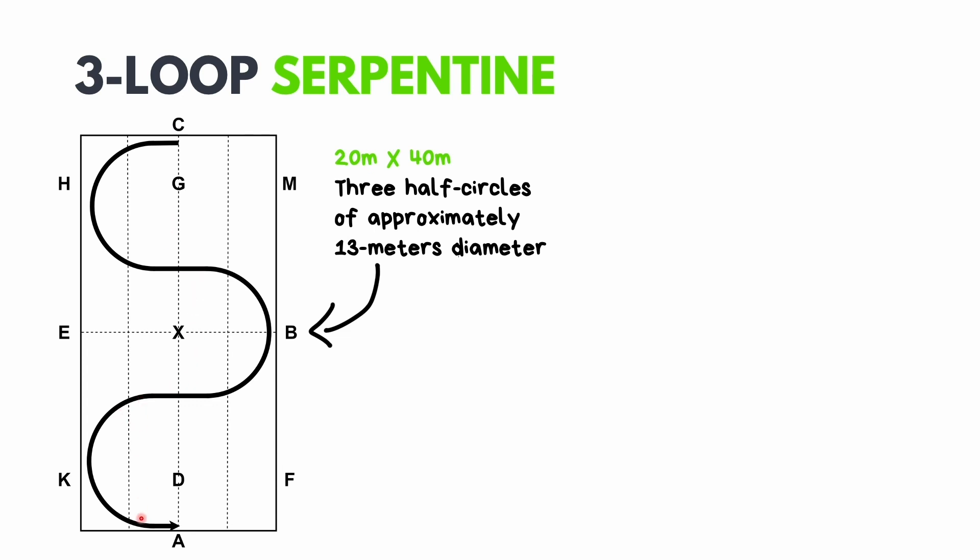I say approximately because it's around 13 and a third meters. This is because the arena is 40 meters long, and you need to get three loops in it. 40 divided by 3 equals 13.3 recurring. So you need to ride these half 13 meter circles in order to get three equal loops.